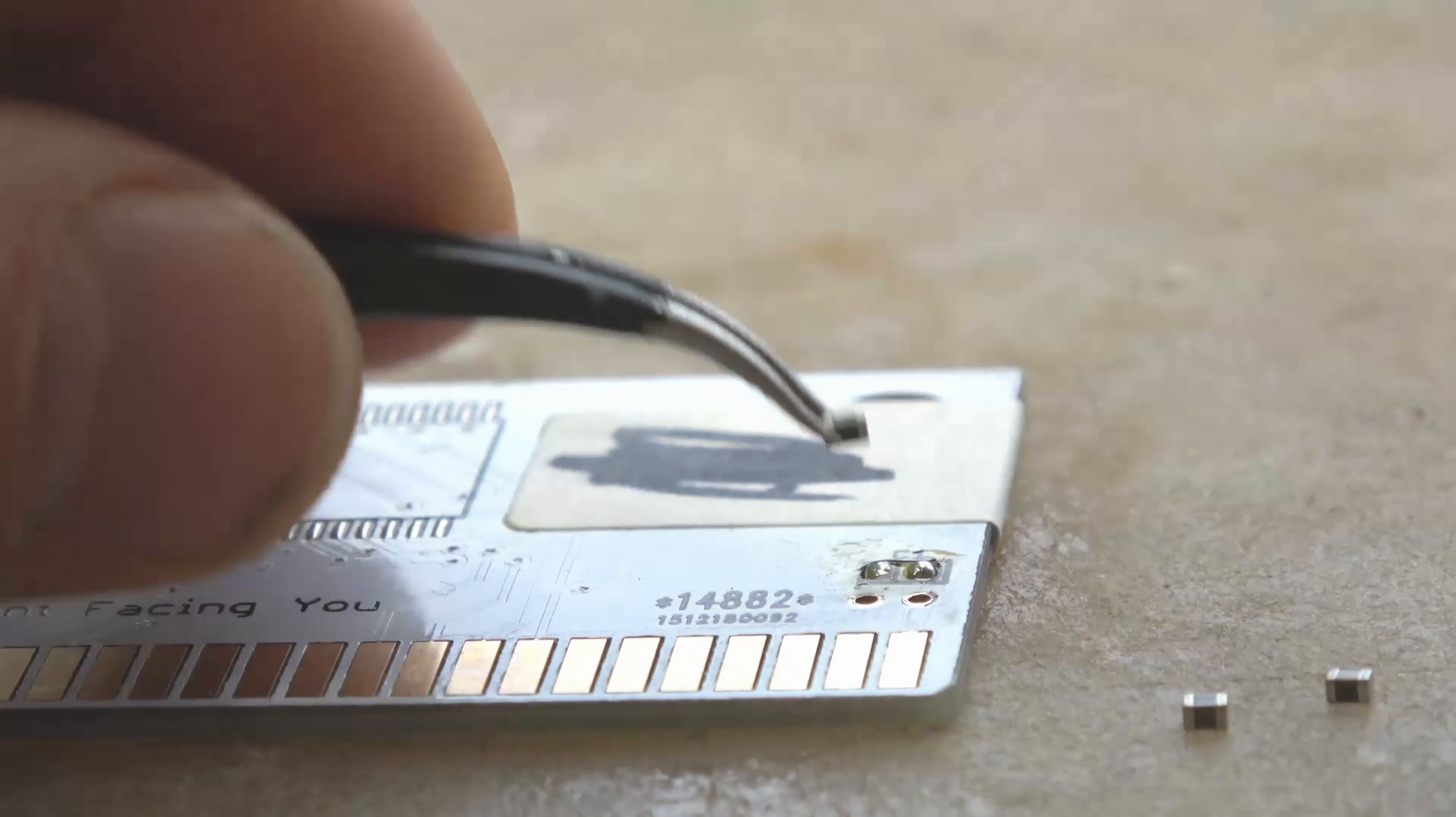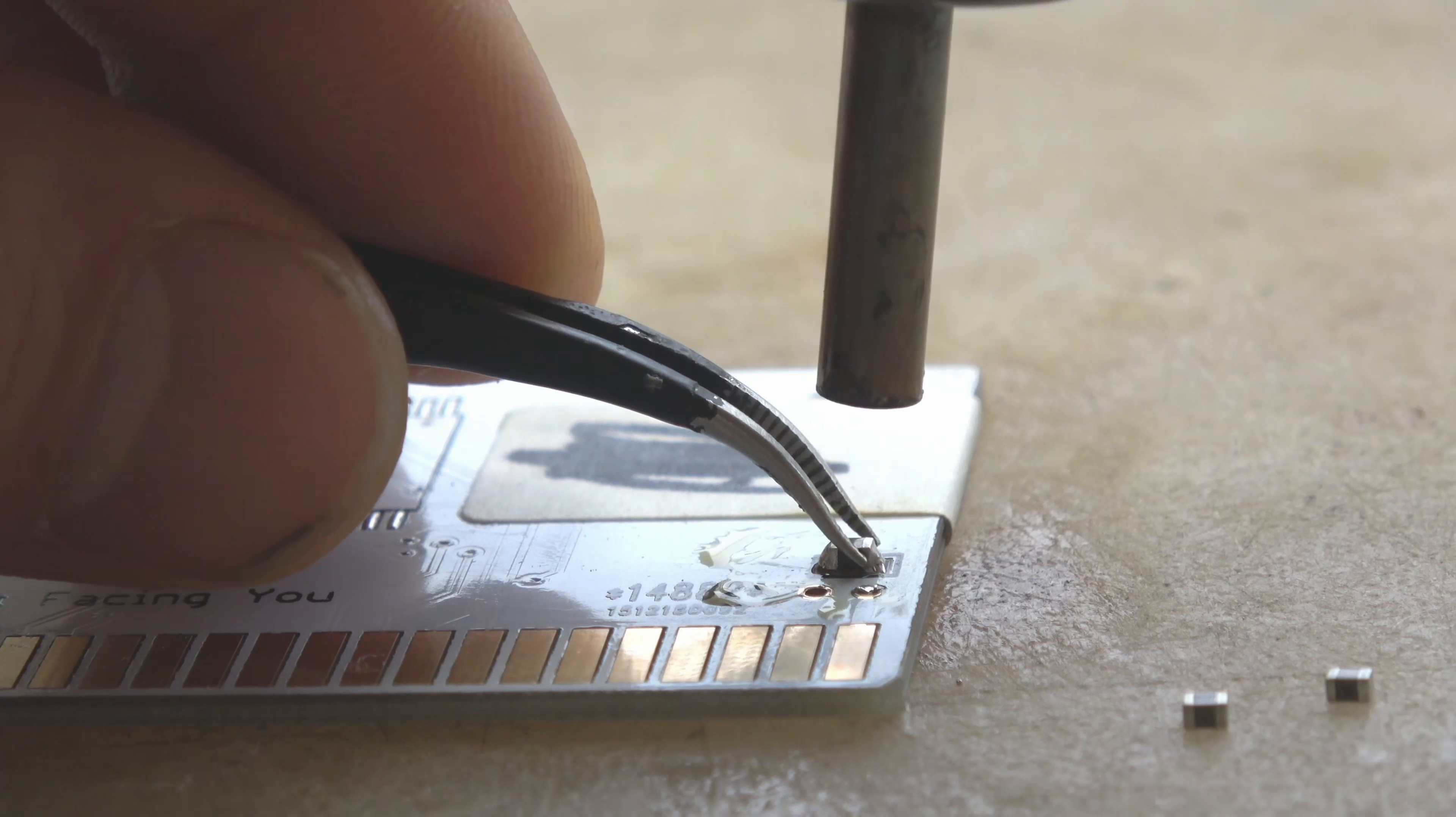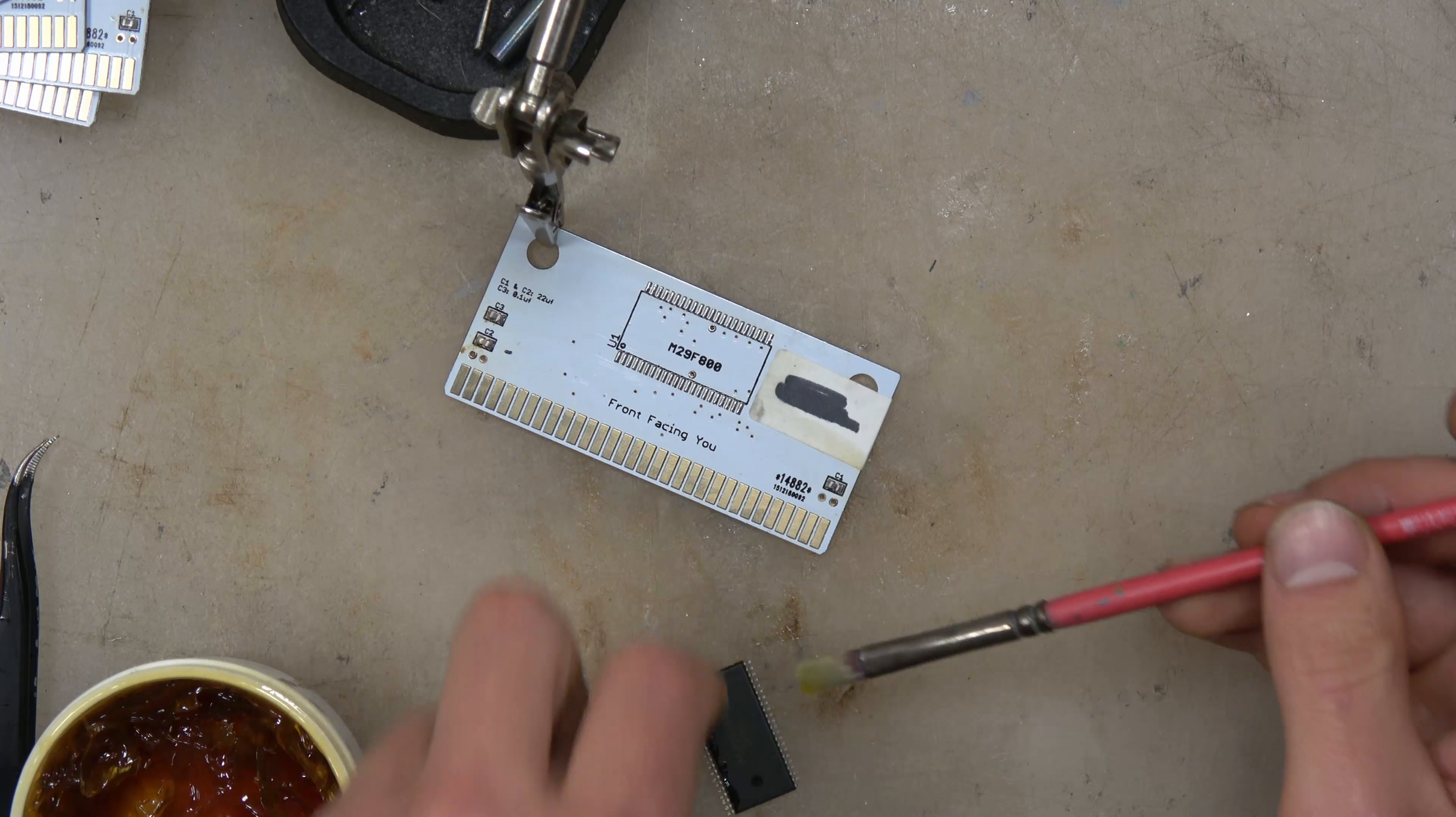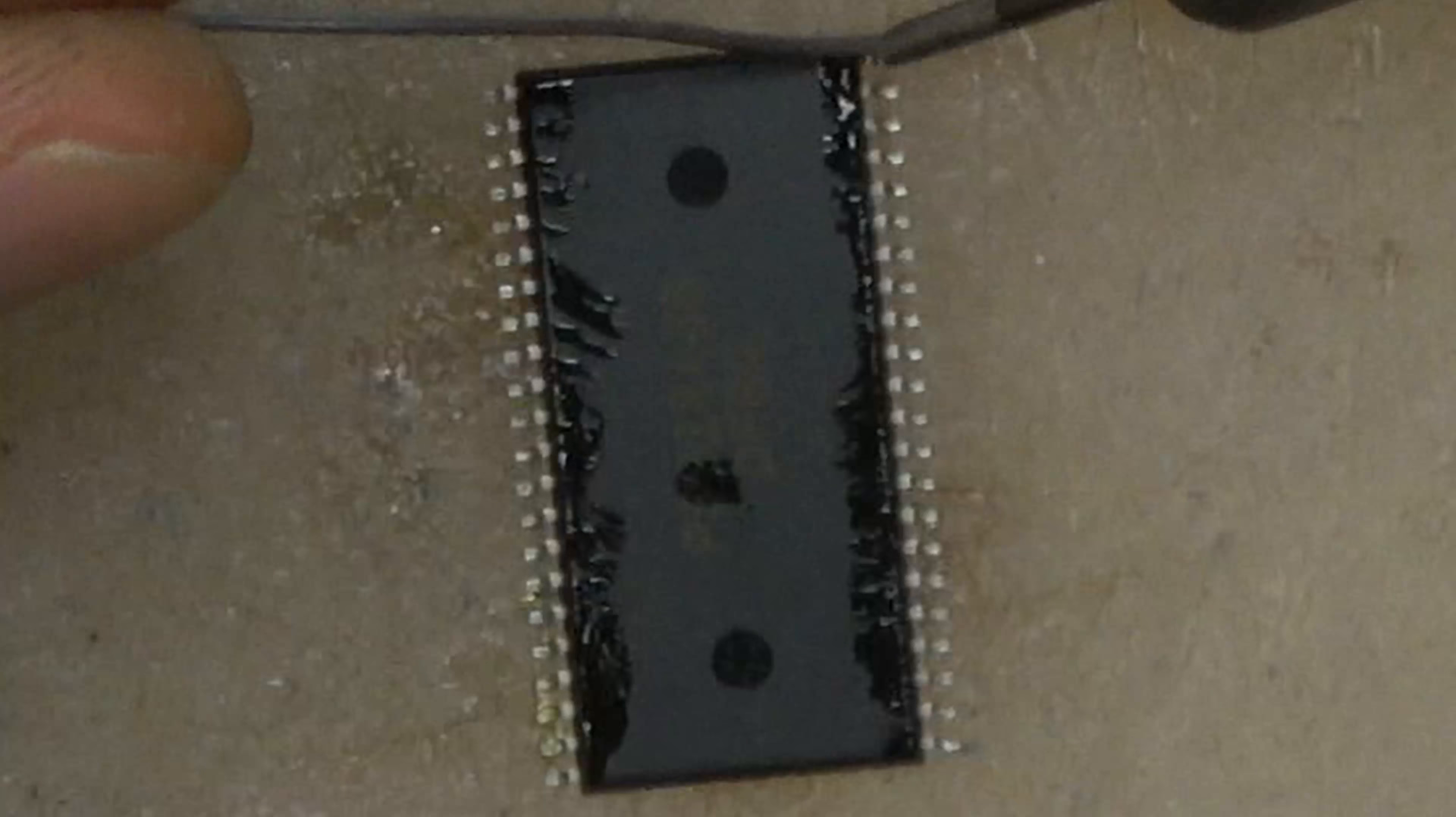You don't want too much heat on the component but that's why it's nice to just go around in a little circle doing it pretty quickly. Just wiggle the hot air gun a little bit, get all that solder nice and loose. It also helps if you have the PCB board clamped down.